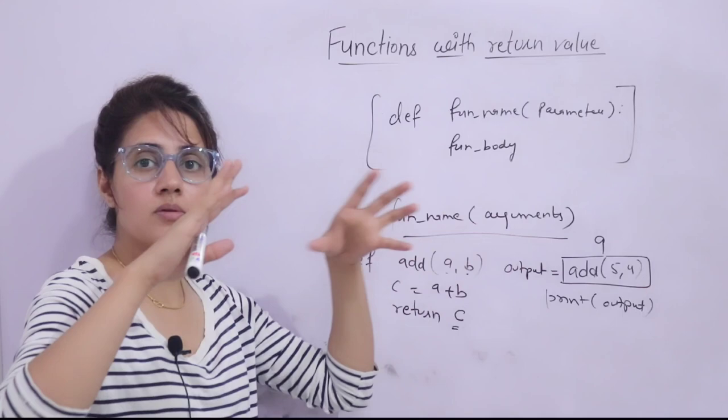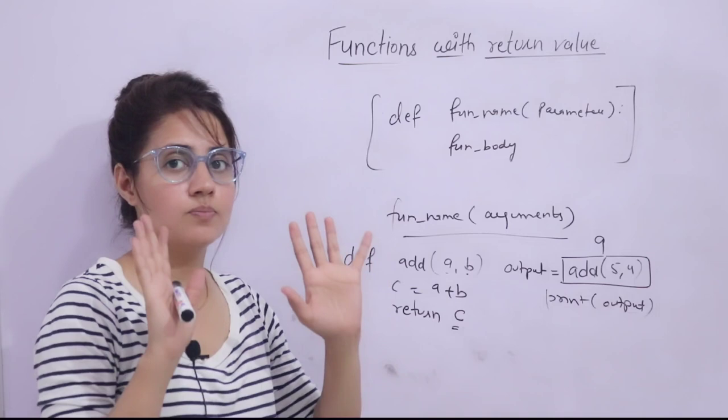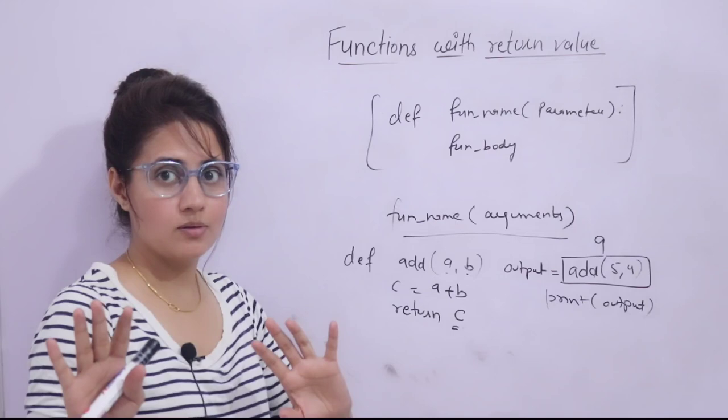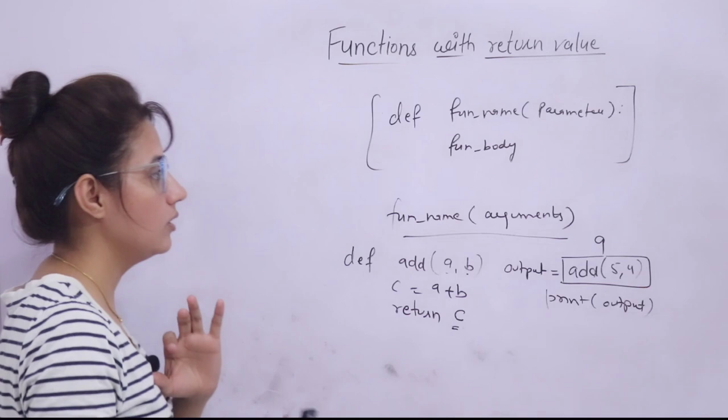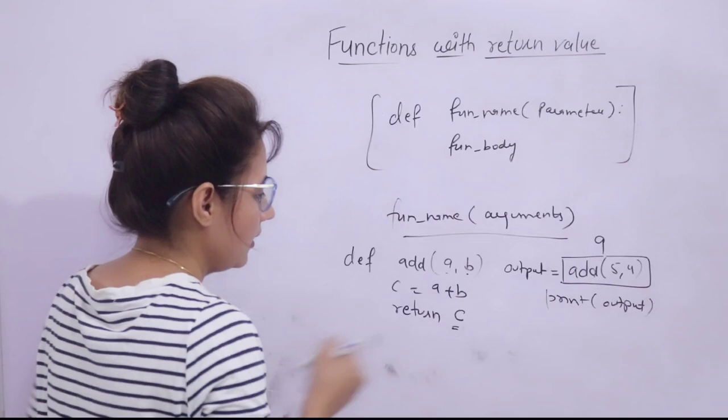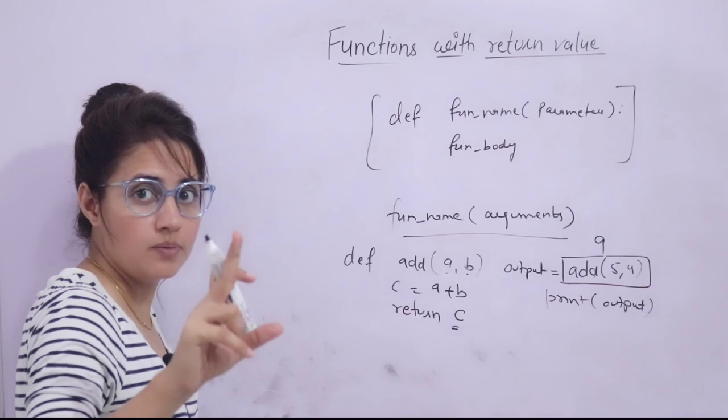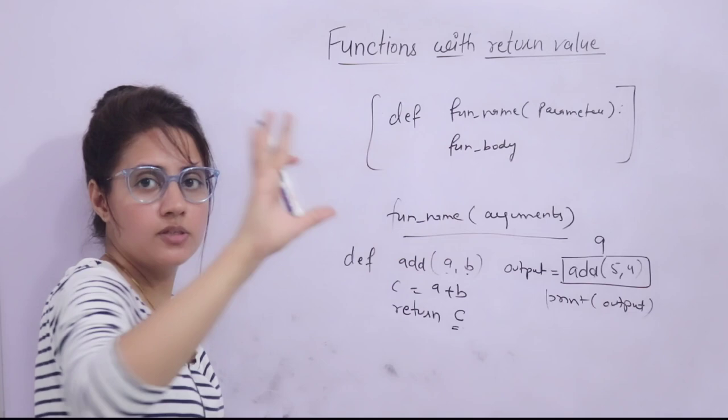All functions have a return value — maybe explicit or implicit. Two types of return statements are there: explicit and implicit. That will be discussed in the next video in detail. This video is just to get you familiar with the basic return statement. A return statement is a special statement that we use inside a function only. If you write return outside a function, it will give a syntax error.